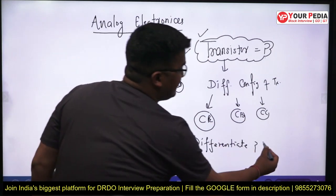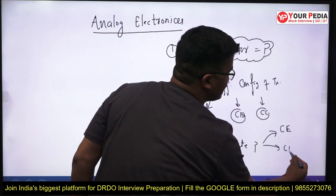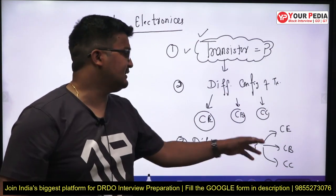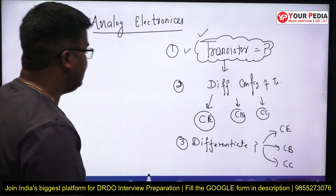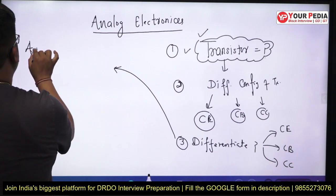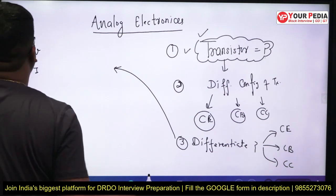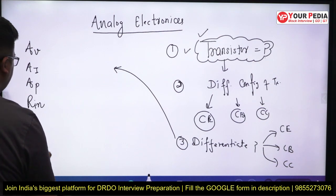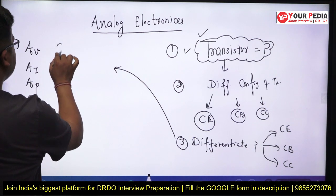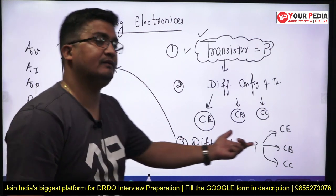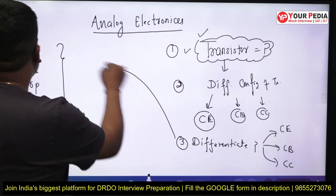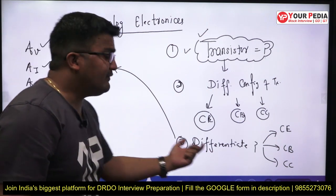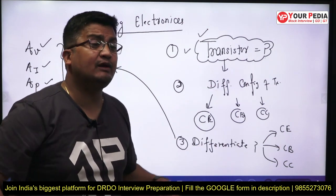To differentiate the configurations, somebody might draw the common emitter, common base, and common collector circuit configurations. But you can answer more effectively by saying: we can differentiate them on the basis of voltage gain, current gain, power gain, input resistance, output resistance, cutoff frequency, and bandwidth. These are the parameters associated with any amplifier configuration. If you answer like this, they will be convinced you possess good knowledge on the topic and will want to test you further.